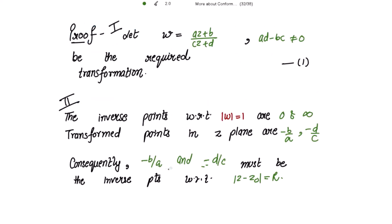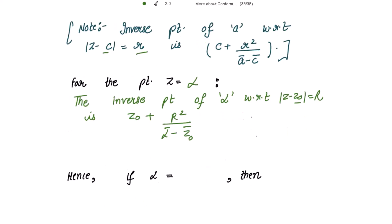Because these two are inverse points with respect to the circle |z - z₀| = r, if we take one of them to be α — that is, α = -b/a — then its inverse point -d/c can be written as z₀ + r² / (ᾱ - z̄₀). Taking the negative sign to the other side gives us the expressions for b/a and d/c.